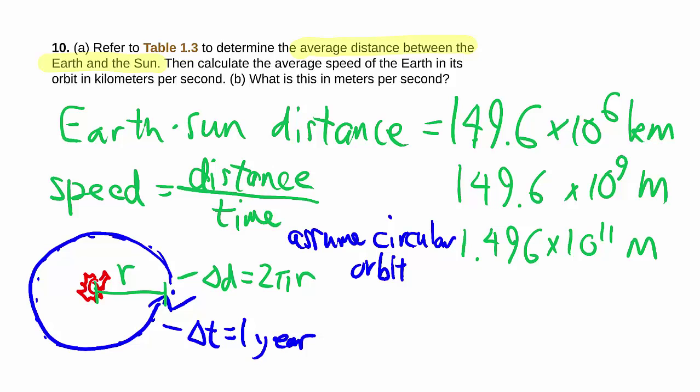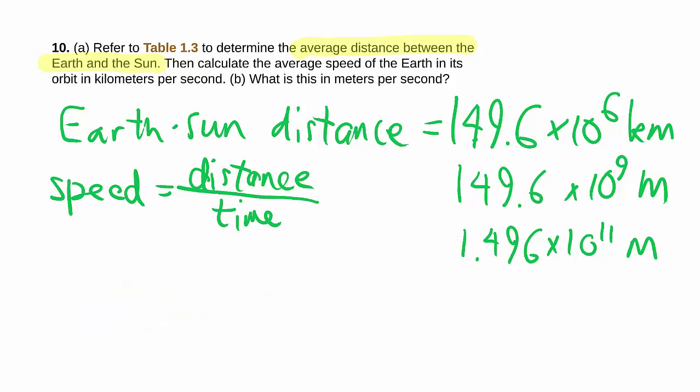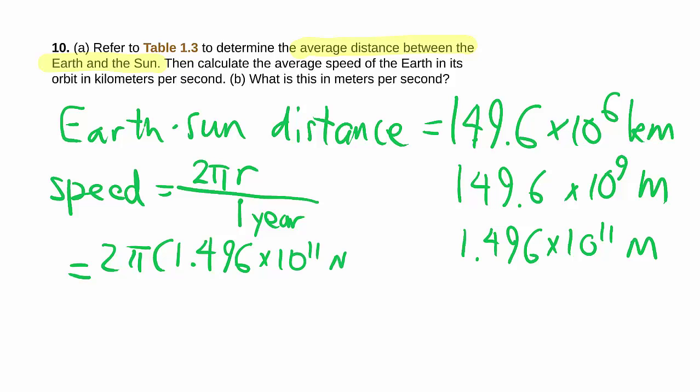So now that we know distance and time, we can figure out the speed, and provide it in appropriate units. So now we can replace the distance with 2 pi r, and then we have the time period of one year. 2 pi r, r of course, is as we said, it's 1.496 times 10 to the 11 meters divided by one year.